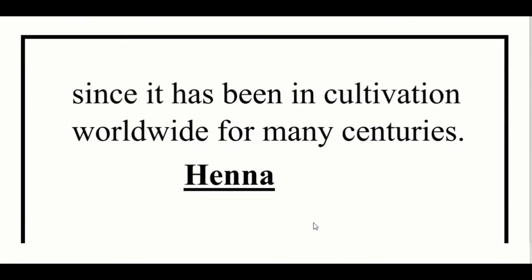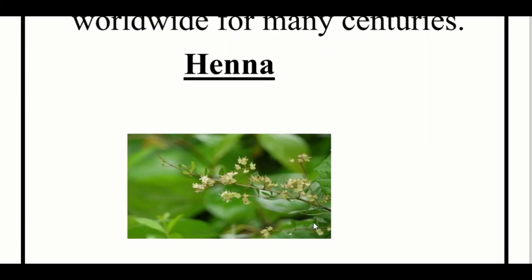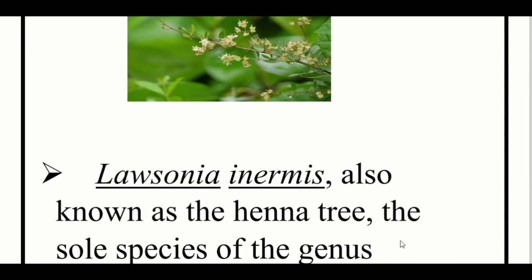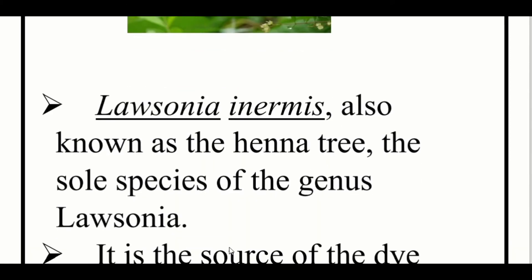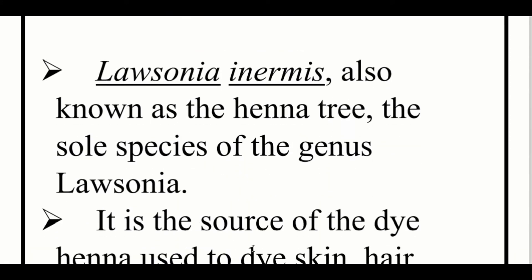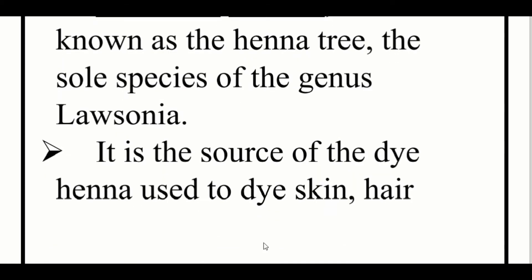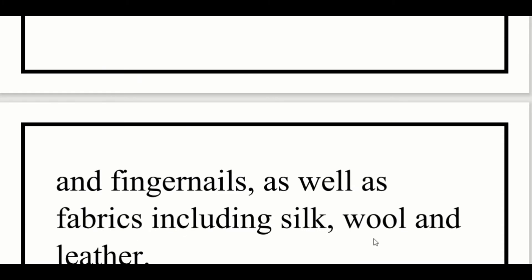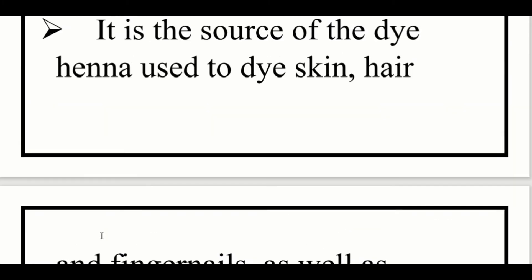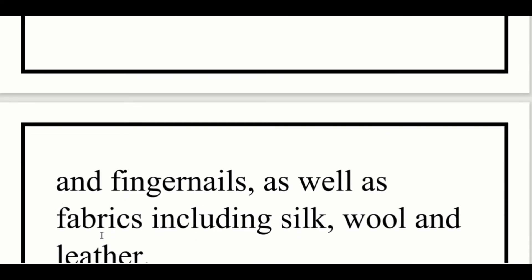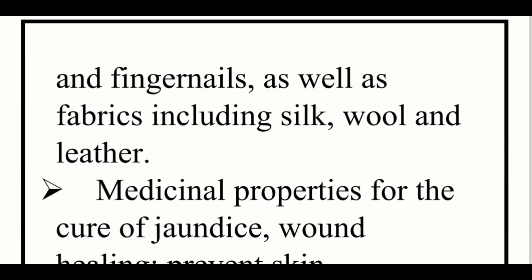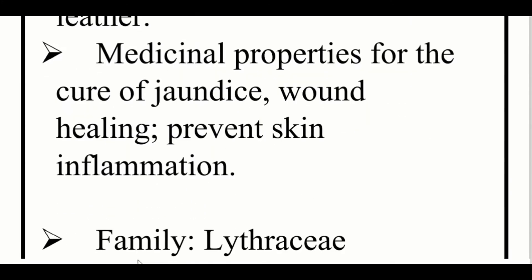The next plant is henna. Lawsonia inermis, also known as henna, is the sole species of the genus Lawsonia. It is the source of the dye henna, used to dye skin, hair, fingernails, and fabrics including silk, wool, and leather. The plant also has medicinal properties for the cure of jaundice, wound healing, and preventing skin inflammation.